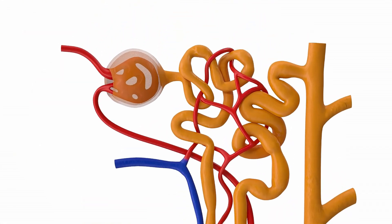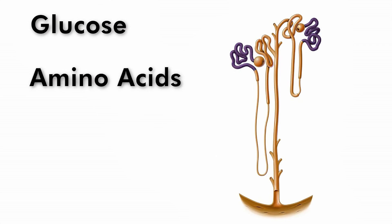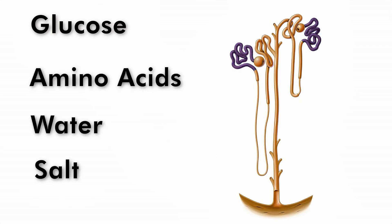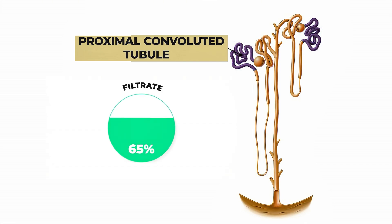As the filtrate travels further in the nephron, essential substances are reabsorbed back into the blood. For example, glucose, amino acids, water, and salts are reabsorbed from the PCT, meaning about 65% of the filtrate is reabsorbed there.